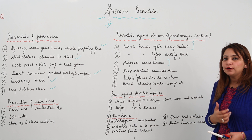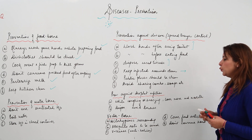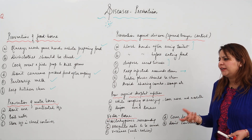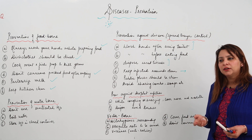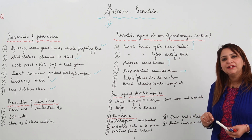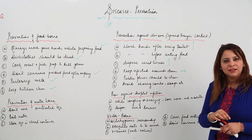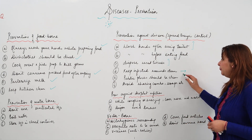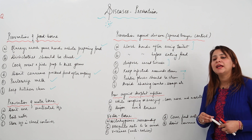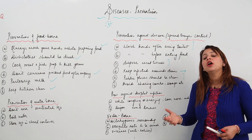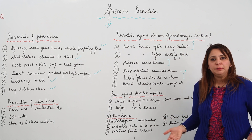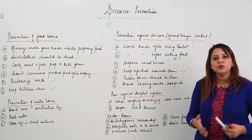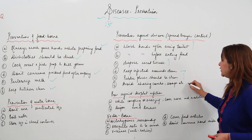Dispose of used tissues — do not use the same tissue again and again, as that can cause the spread of disease. Keep infected wounds clean; if you get a cut, clean the wound and apply antiseptic cream, otherwise it can become a source of infection. Keep public places clean, as places like railway stations are used by many random people and infected persons can spread germs.